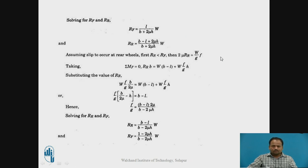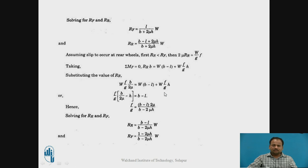For the reverse condition, if RR is less than RF, then 2 mu times RR equals W by G times F. Here we need to take the moment about the front wheel. The equation obtained after taking the moment about the front wheel gives us the A by G ratio. By putting this A by G value into the first equation, we will get RR and RF values.